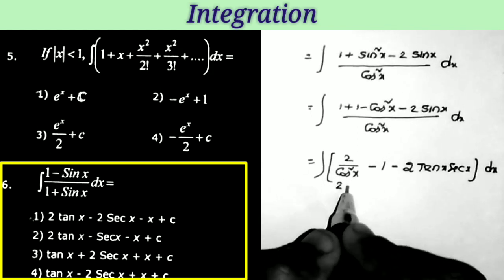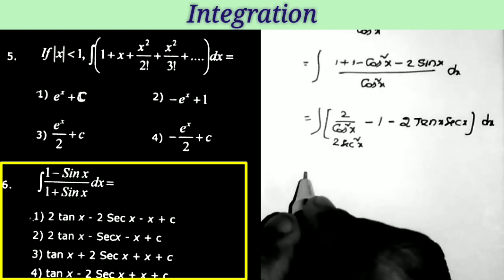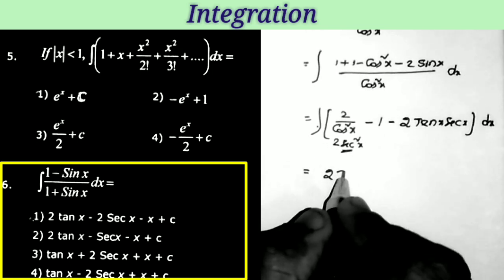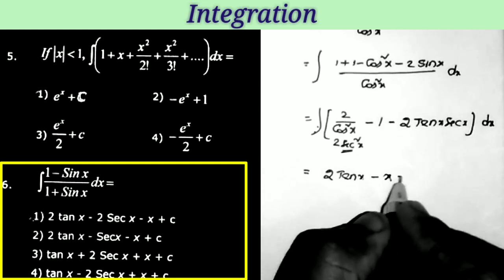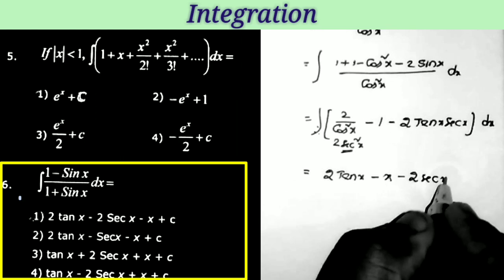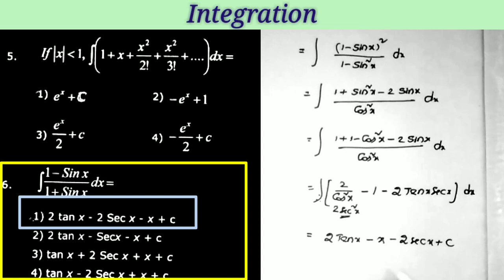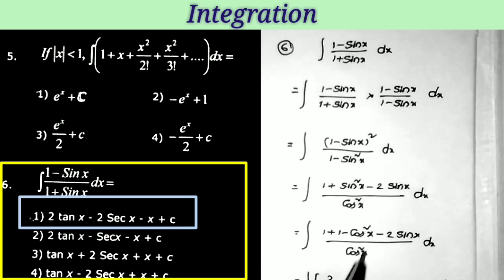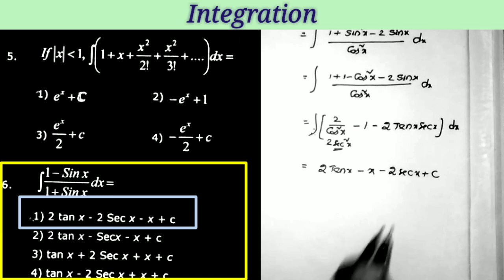So the integrand becomes 2sec²x − 1 − 2sec x·tan x. Doing the integrations: 2·∫sec²x dx = 2tan x, minus ∫1 dx = x, minus 2·∫sec x·tan x dx = 2sec x + c. So the answer is 2tan x − x − 2sec x + c, which is the first option.